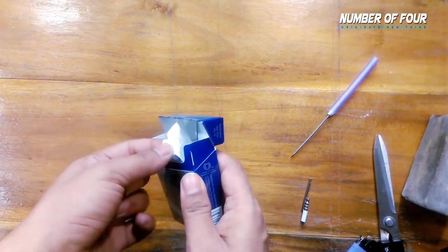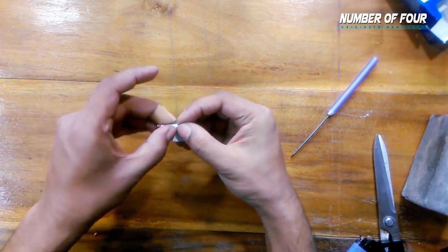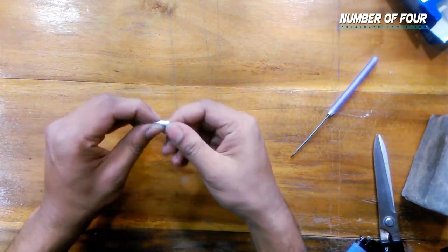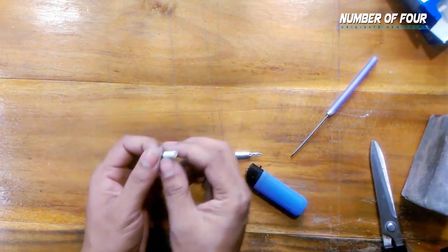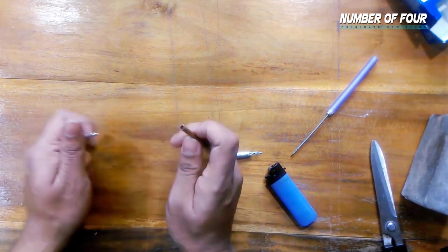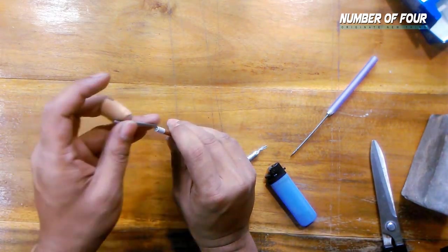At first, I rub this headphone jack cover with aluminum paper, then heat it. But don't heat it too much because if you heat it too much it will melt down. Now I use this tool for opening the headphone jack cover.